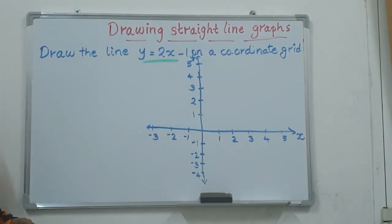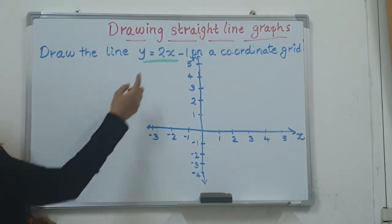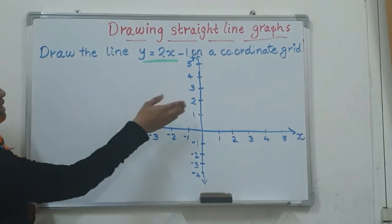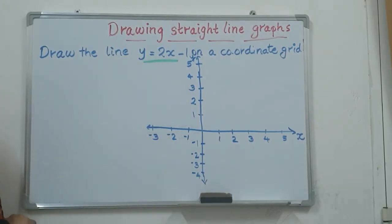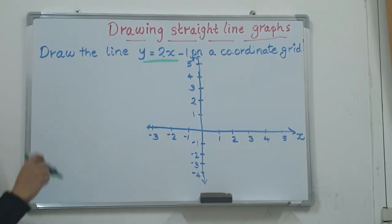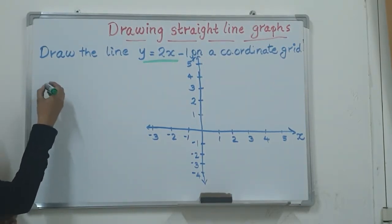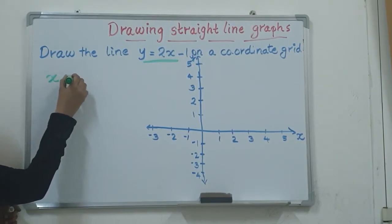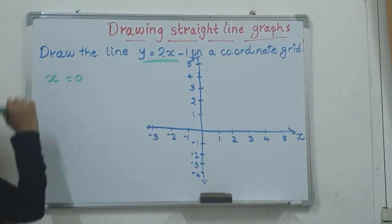Before that we have to know the values of x and y. How do we find the values of x and y to find the straight line on the coordinate grid? First of all, I can just take the value of x as 0.